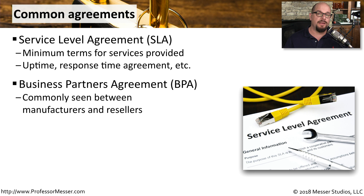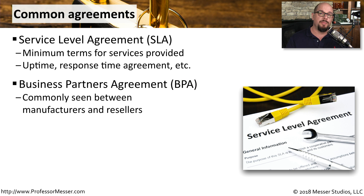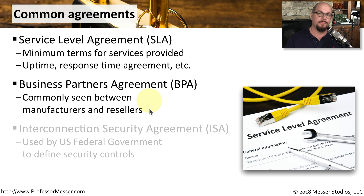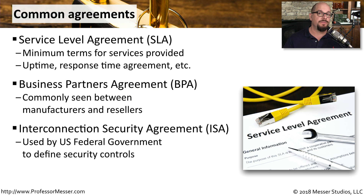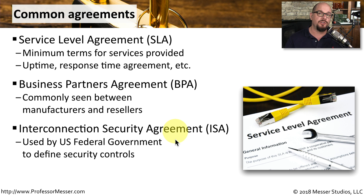Organizations that have longer term and broader relationships may create a business partners agreement, or a BPA. This is the type of agreement you might find, for example, between a manufacturer and a reseller. And if you're part of the United States federal government, you may be required to agree to an interconnection security agreement, or an ISA. This defines security controls, especially when different departments of the US federal government are connecting to each other.